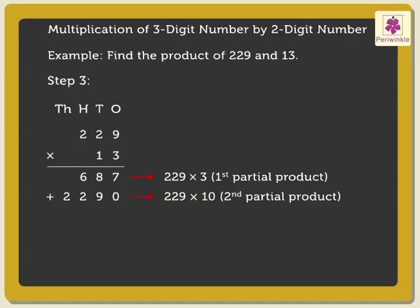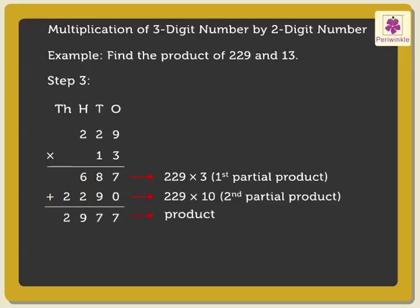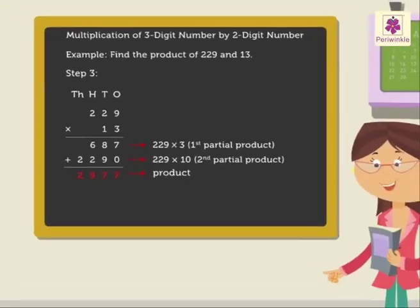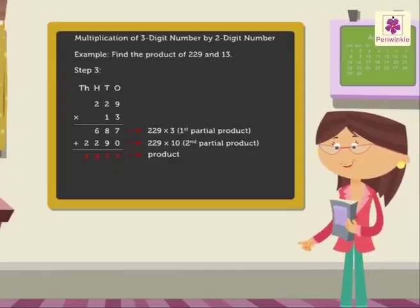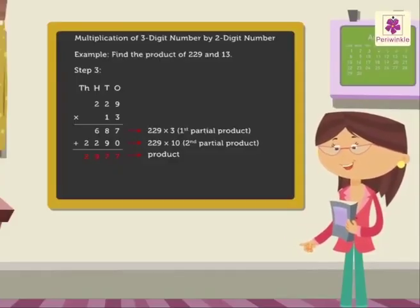Now add both the partial products obtained, that is, 687 plus 2,290, to get the answer, which is equal to 2,977. Wasn't it easy learning multiplication of 3-digit numbers by 2-digit numbers?